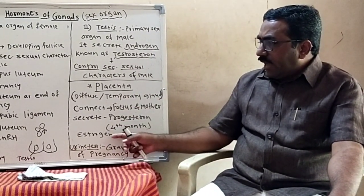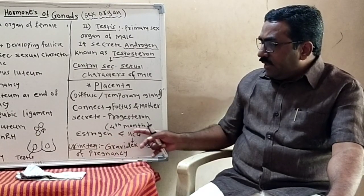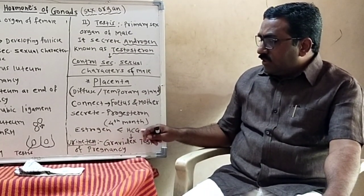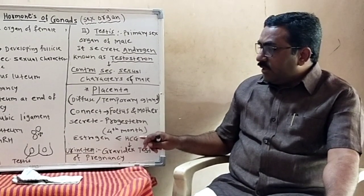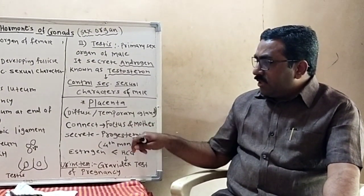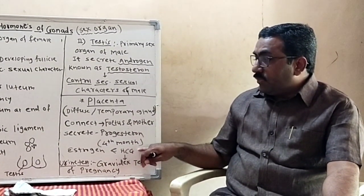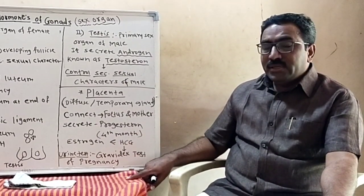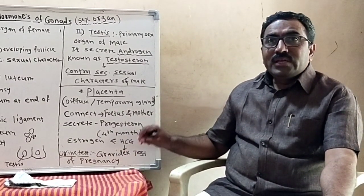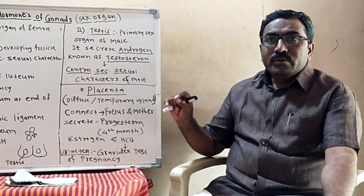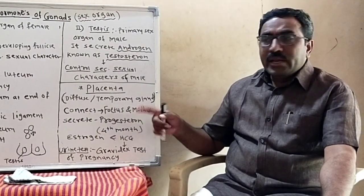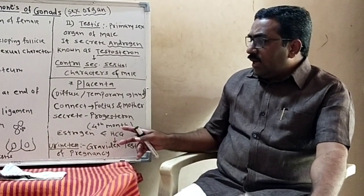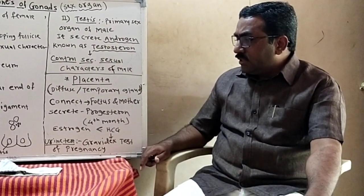The hormone produced here — when HCG hormone is present in the menstrual cycle and urine, this condition indicates pregnancy.